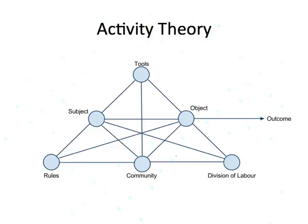The model proposes that the individual does not act in isolation, and thus the relationship between the individual and their community must be considered. The subject's relationship in the community is mediated by rules. Furthermore, the community's relationship to the object of activity is mediated by roles, the division of labour, and power relations within the community.